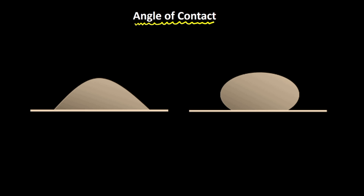Whenever a liquid is in contact with a solid, the surface of the liquid is curved. As you can see, it could curve in these possible ways. The particular shape that would be occupied by the liquid depends upon the relative strength of the cohesive and the adhesive forces.